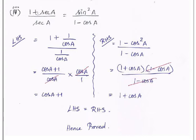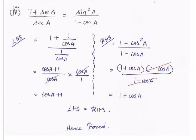Next problem — the 4th one: (1 + sec·A)/sec·A = sin²A/(1 - cos·A). In the LHS, replacing sec·A with 1/cos·A, both numerator and denominator contain 1/cos·A. Taking LCM of the numerator gives (cos·A + 1)/cos·A. Multiplying by the reciprocal of the denominator (cos·A/1), the cos·A cancels and we get cos·A + 1.